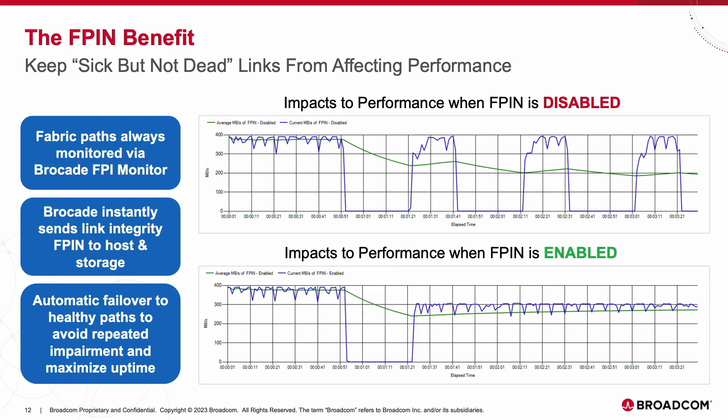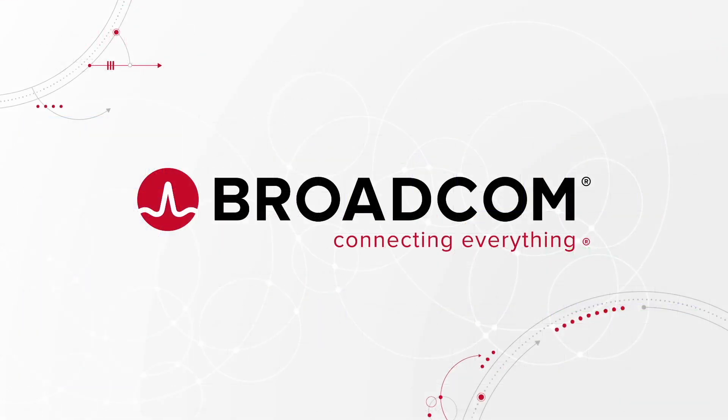The benefit of Fabric Performance Impact Notifications in the SAN lies within the fact that autonomous actions are taken without user intervention. Since end devices are becoming aware of the various conditions captured in the Fabric, this further reduces the impacts to the SAN, as well as the time required by end users to identify, troubleshoot, and apply a fix to restore IT operations. Thank you for watching. To learn more about what Brocade has to offer, please visit Broadcom.com.